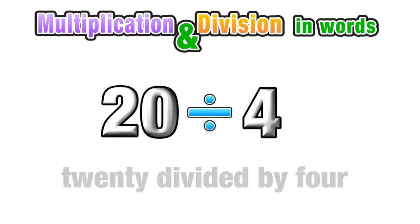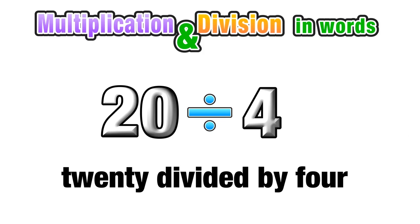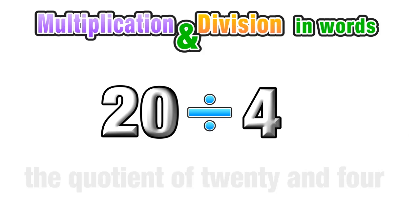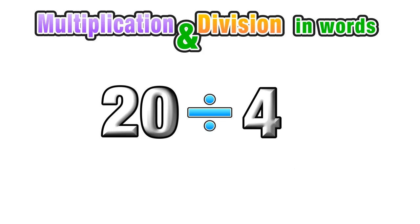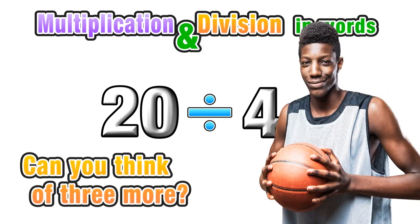So this example can be expressed verbally simply as 20 divided by 4. Another way would be to say the quotient of 20 and 4. So using that list of words and phrases, can you think of three more ways to express 20 divided by 4 in words?